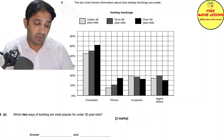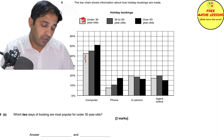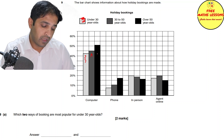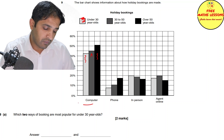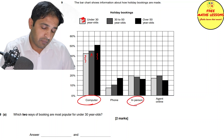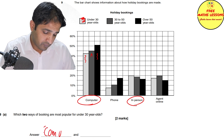Question nine uses bar charts for how people book their holidays. The light grey bars are for under 30s, the medium grey for 30 to 50, and the black for over 50. The two most popular booking methods for under 30s are computer and in-person — those are the two answers, worth two marks.